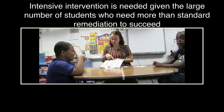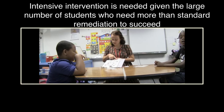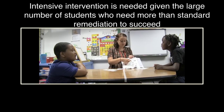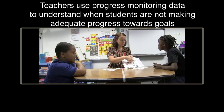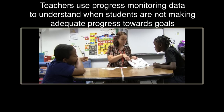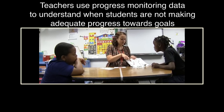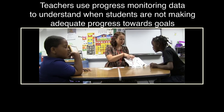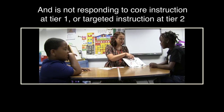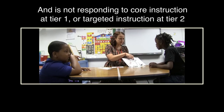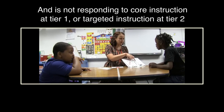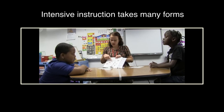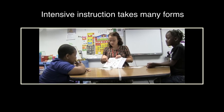In sum for Part 1, there is a need for intensive intervention due to the large number of students who need more than standard remediation to succeed. The need for intensive intervention is determined when teachers, using progress monitoring data, note that a student is not making progress toward IEP goals or has not responded or improved with additional supports in general education and when also receiving supplemental Tier 2 instruction. Intensive intervention takes many forms, which we highlight in the next segment of this video.